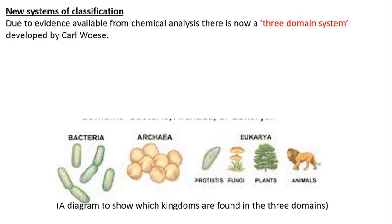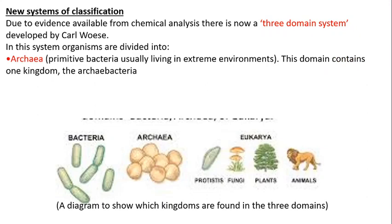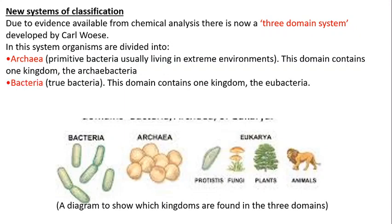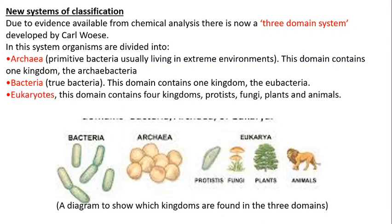And this is where Woese comes in. He looked at chemical analysis and DNA analysis, and he found out that those kingdoms we know of — animals, plants, fungi, bacteria, prokaryotes, and protists — he found out that actually, it's not as straightforward as that. There are almost three biochemical domains. One is called Archaea, which is primitive bacteria, usually extremophiles; then Bacteria, the normal prokaryotes; and Eukaryotes.